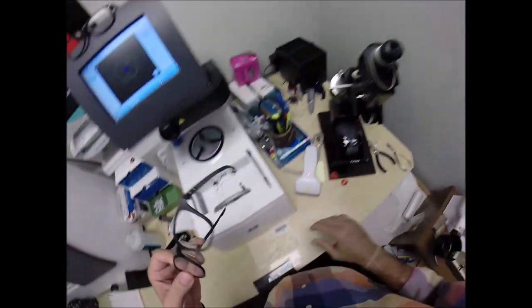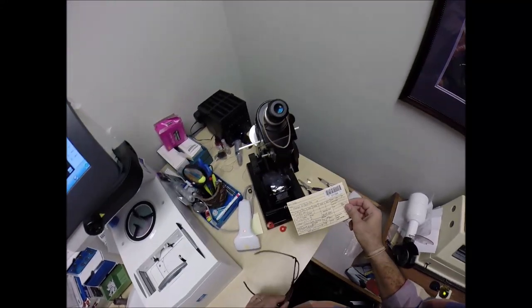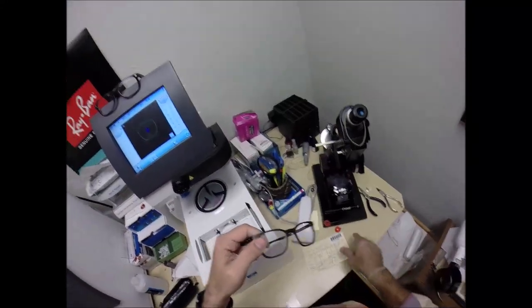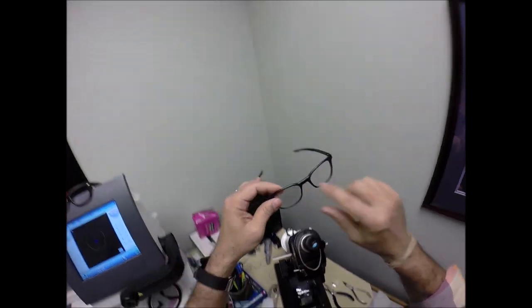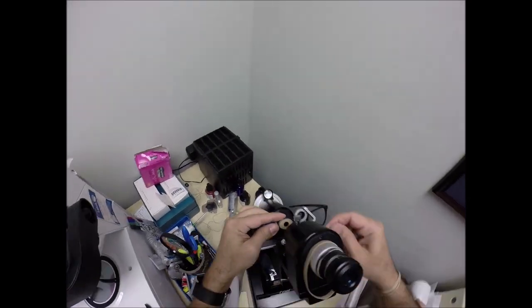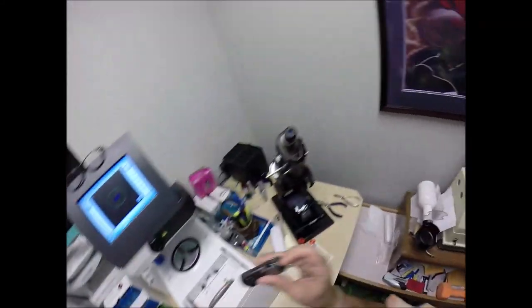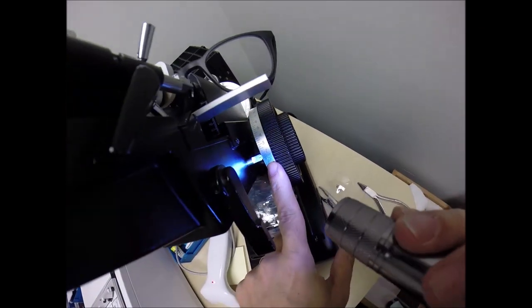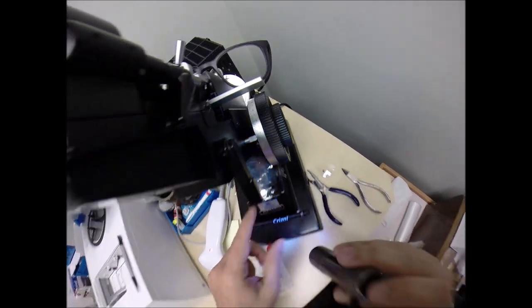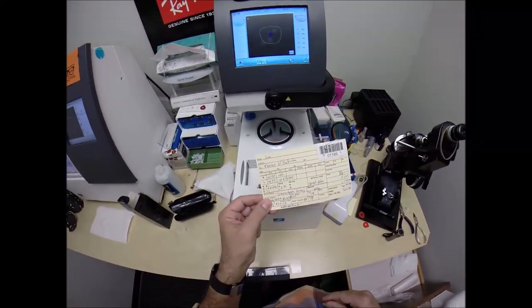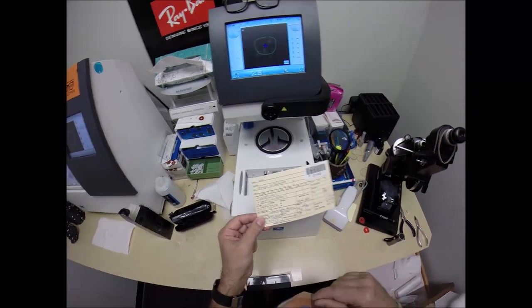So we're going to come down here to the lensometer. We're going to spin the axis wheel to nothing because your right lens is spherical, plus 150 sphere. So I'm going to place it in above that black dot and read the power. And I am getting plus 150 exactly halfway between 1 and 2.